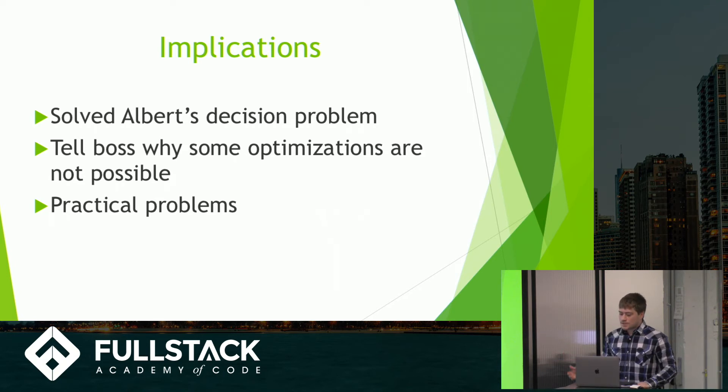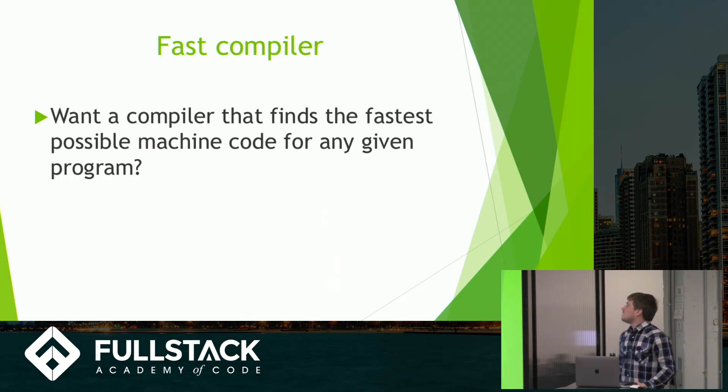Because what he's asking you to do is the halting problem described or disguised. So they just won't understand that. And this is some kind of logic that you can throw at them to tell them why it's not possible. Also, if you want a compiler that finds the fastest possible machine code for any given program, you can't do it. It's a halting problem.